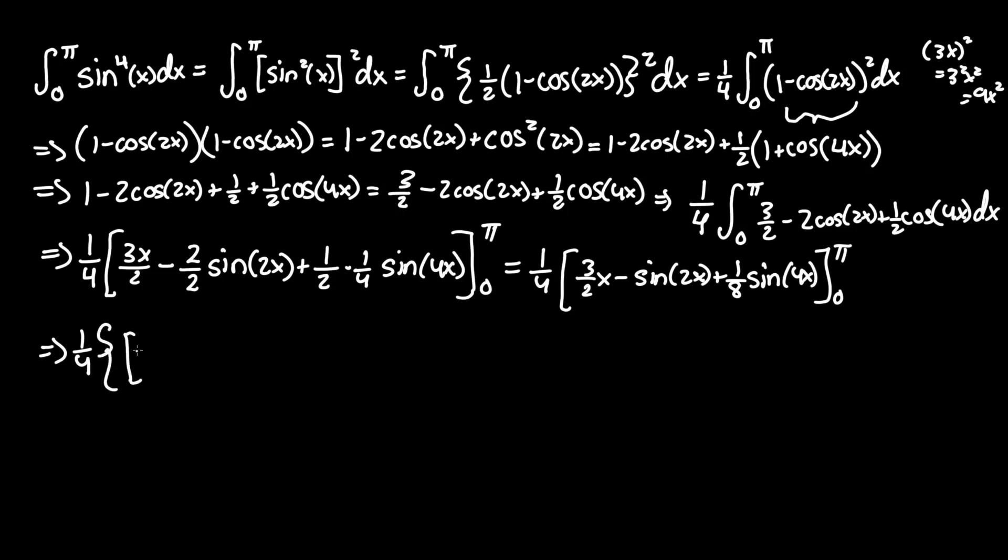For the upper pi, we plug in 3 halves times pi, minus sine of 2 pi, plus one eighth of sine of 4 pi. Subtract that by 3 halves times zero, minus sine of zero, plus one eighth sine of zero.